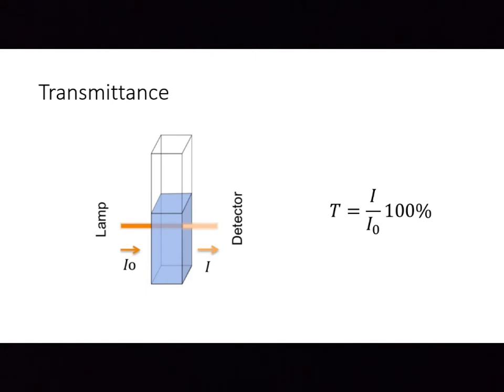If the solution absorbs a lot of light with a certain wavelength, then the intensity of the transmitted light is much smaller than the intensity of incident light, therefore transmittance is very small. If the solution does not absorb any light at all, then the intensity of the transmitted light is equal to the intensity of the incident light and transmittance becomes one.